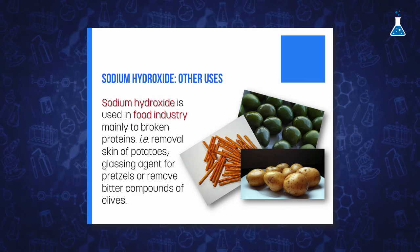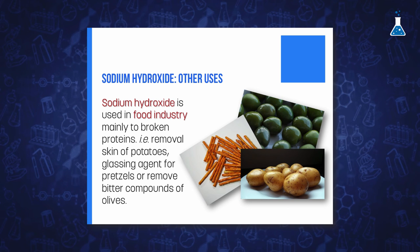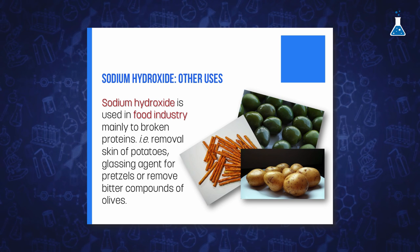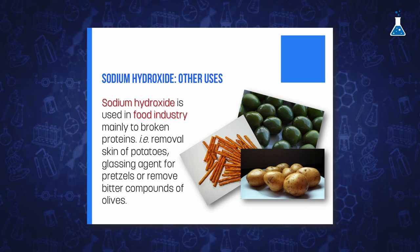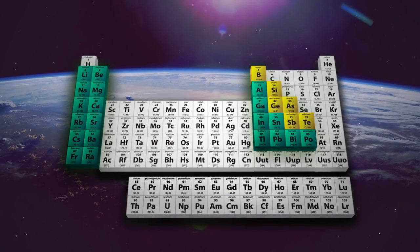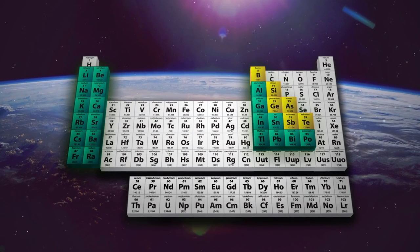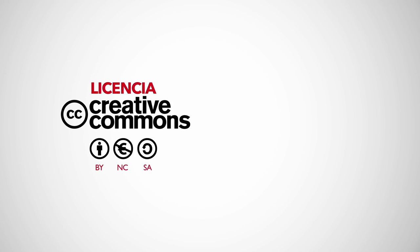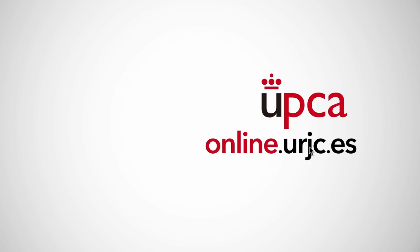Sodium hydroxide is also used in the food industry mainly to break proteins, for example to remove the skin of potatoes before processing, or as a glazing agent for pretzels, or to remove bitter compounds in olives to make them edible.